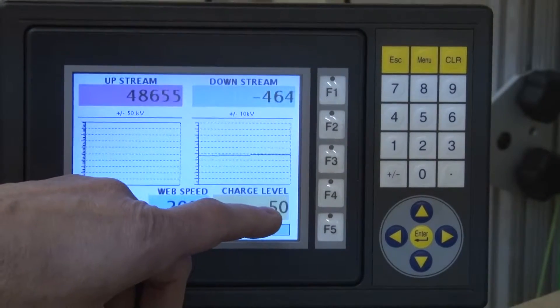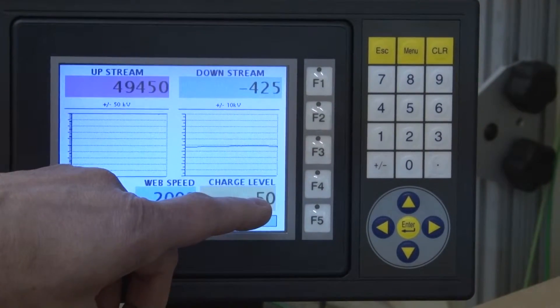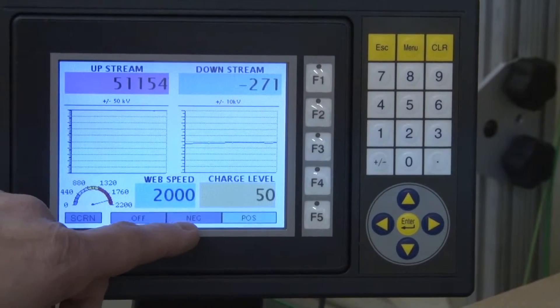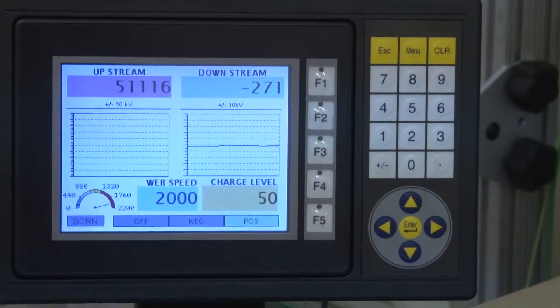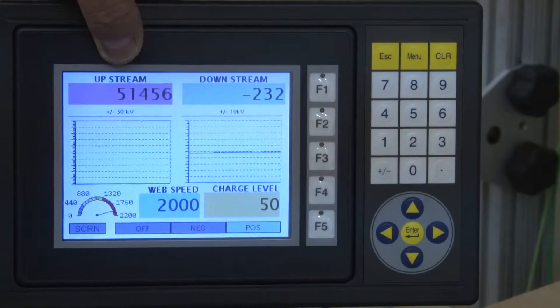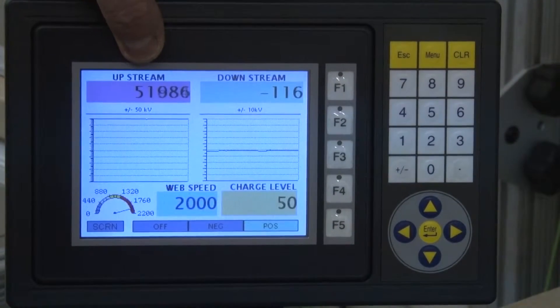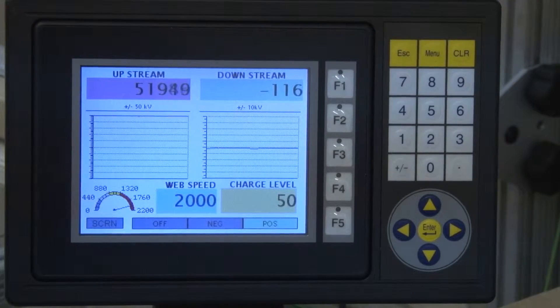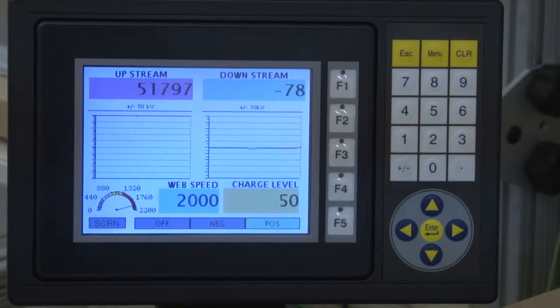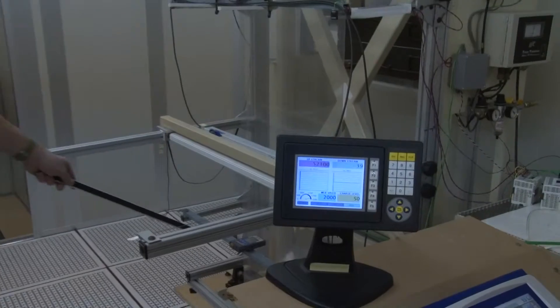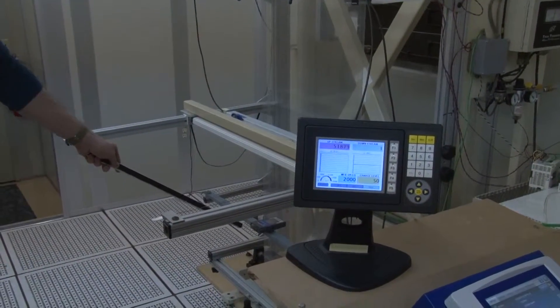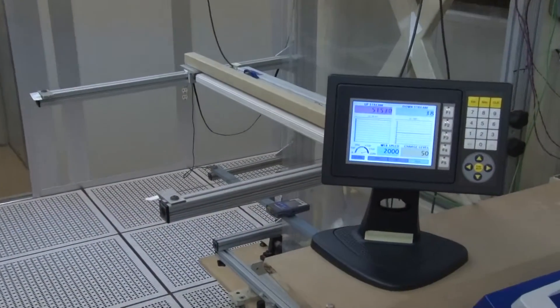We can set the charge level, which is 50,000 volts, and we can set the polarity of the charge, so we have positive 50,000 volts on the web. You can see that our upstream sensor is reading 51,000 volts, so we're making that 50,000 volts on the upstream sensor. So at this point on the material we have 50,000 volts.